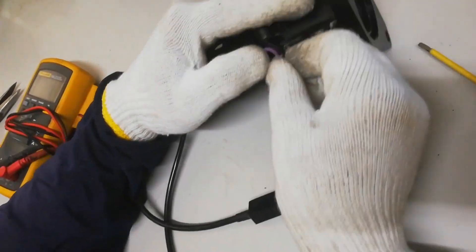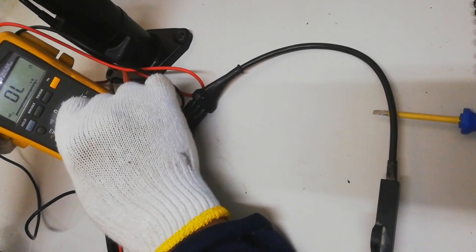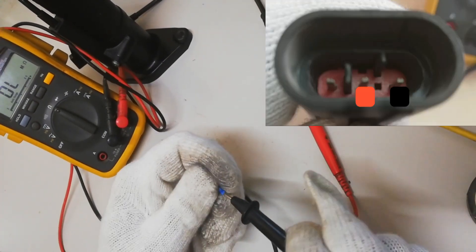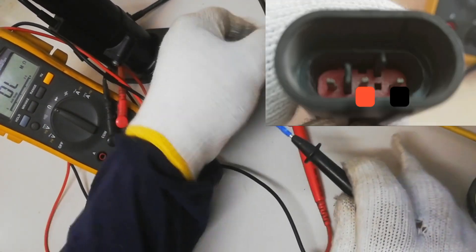Disconnect the sensor from the clutch master cylinder. Set the multimeter tester to ohms and connect the test probe to the same pin.